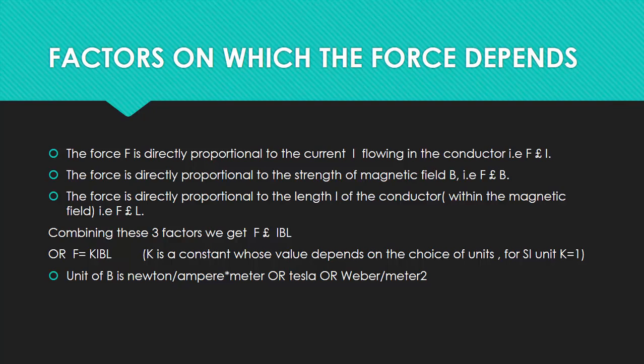So the factors on which this Lorentz force depends. The Lorentz force depends upon current flowing through the conductor. Then second, the strength of the magnetic field that is produced by that horseshoe-shaped magnet.